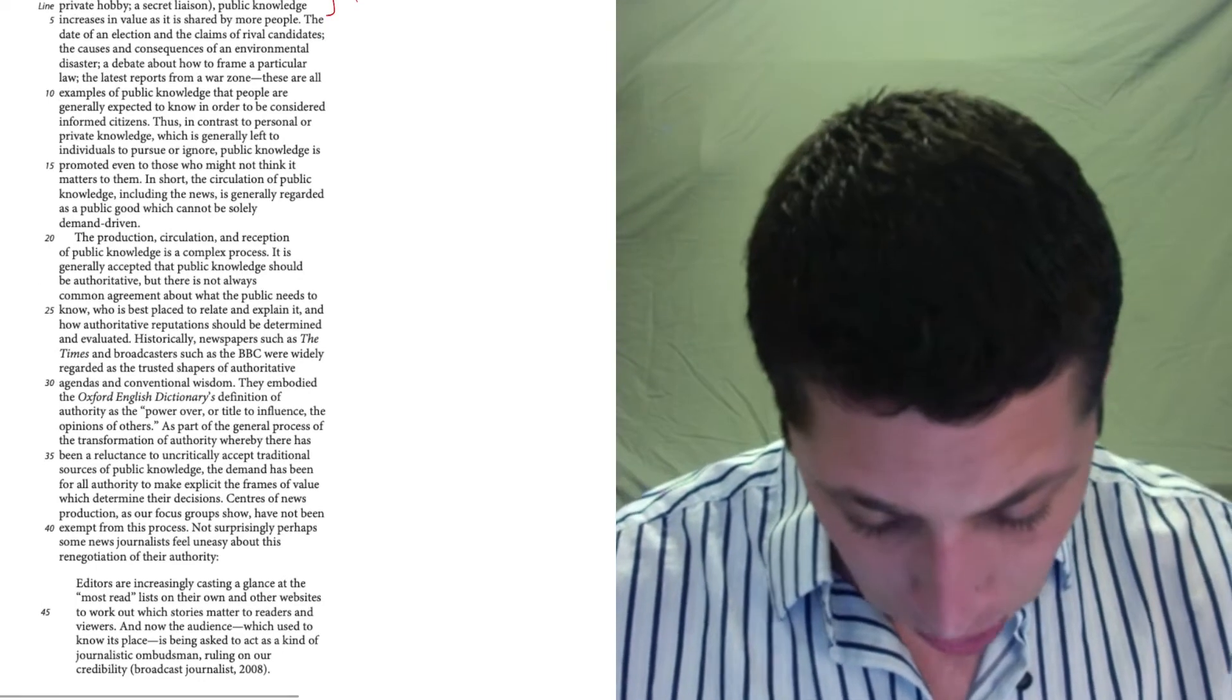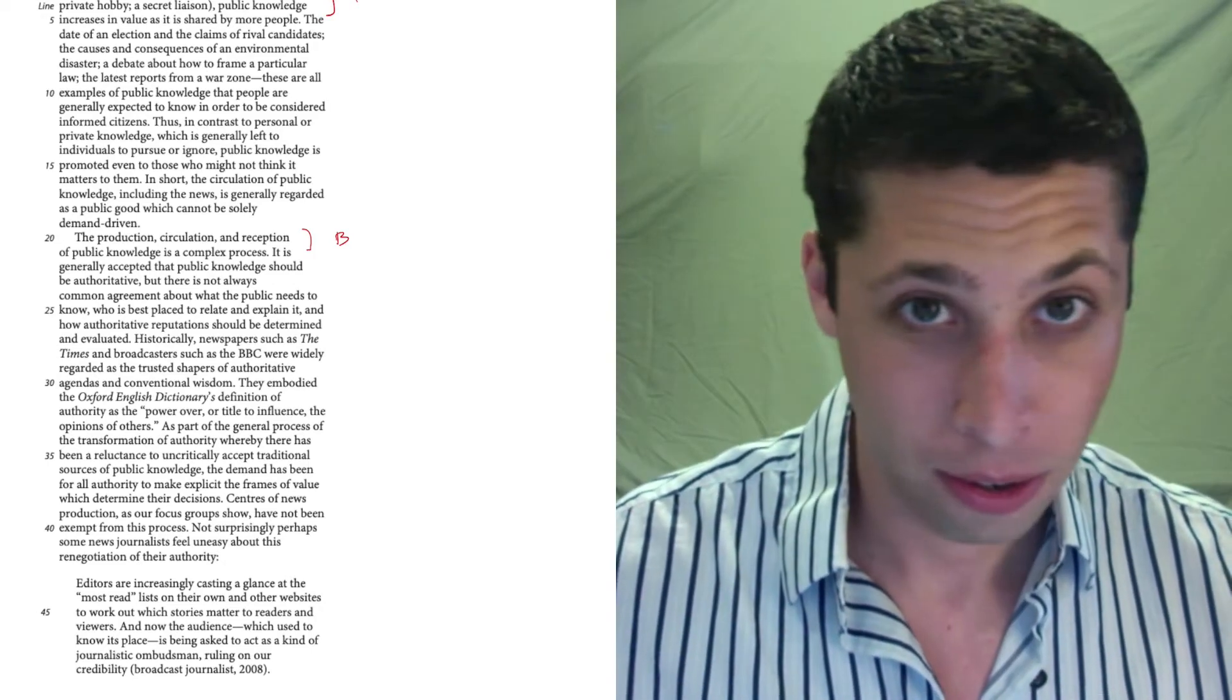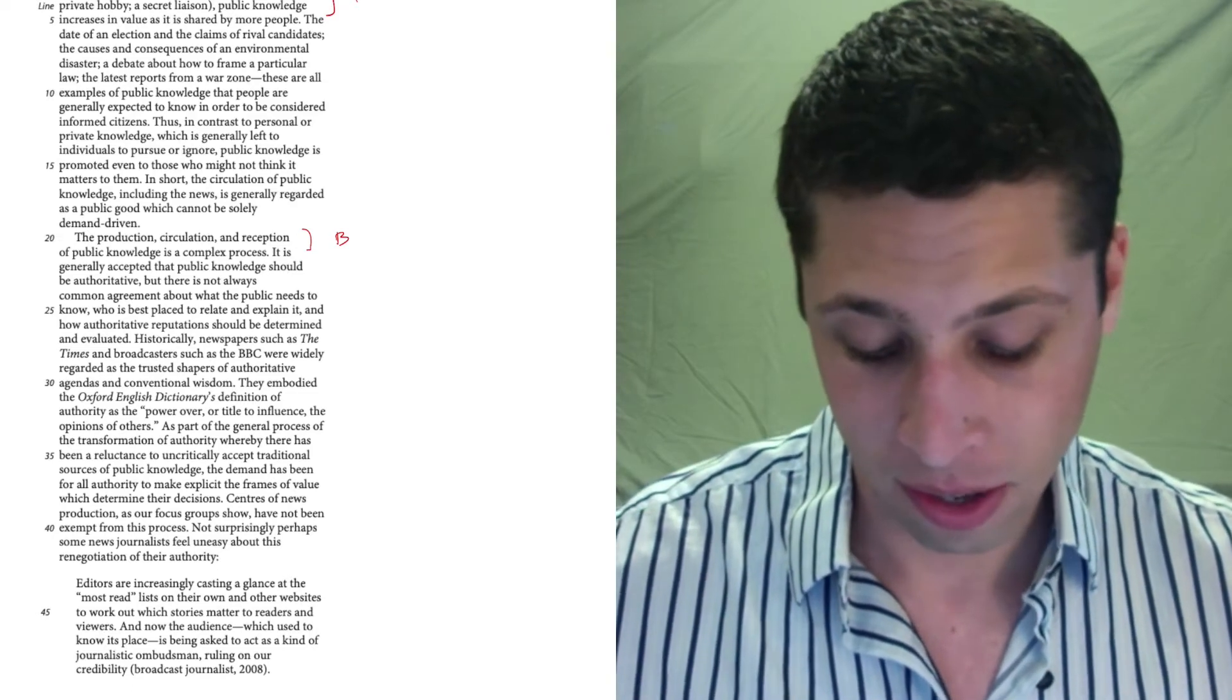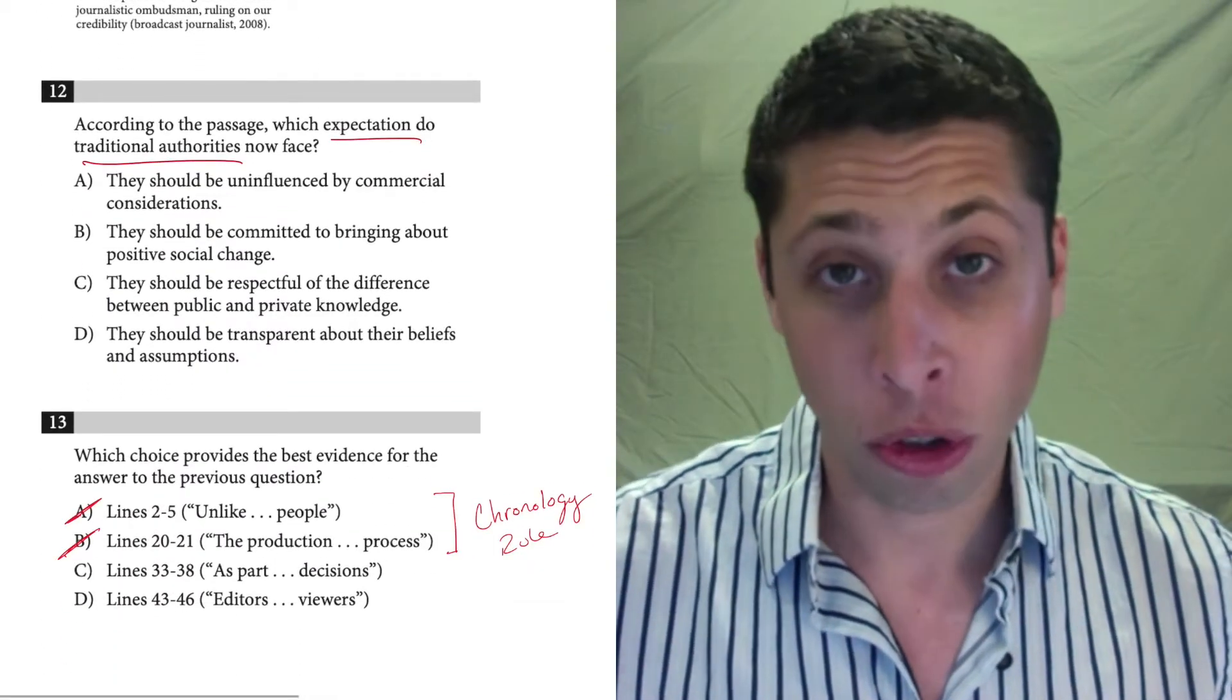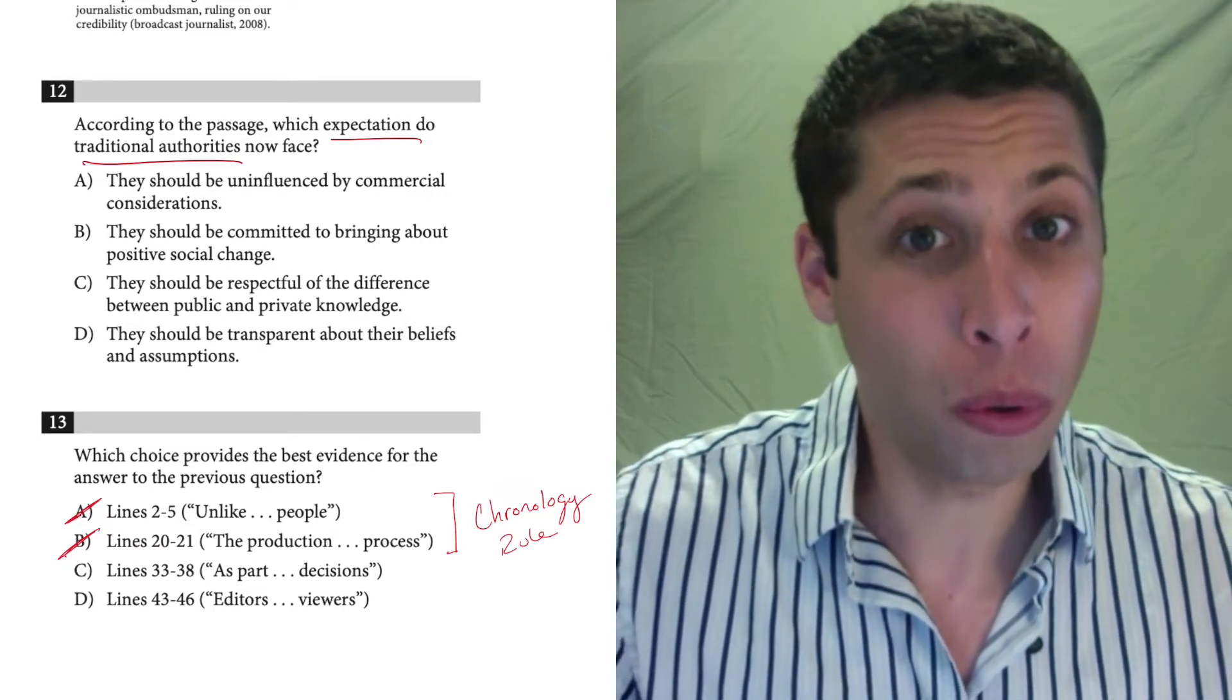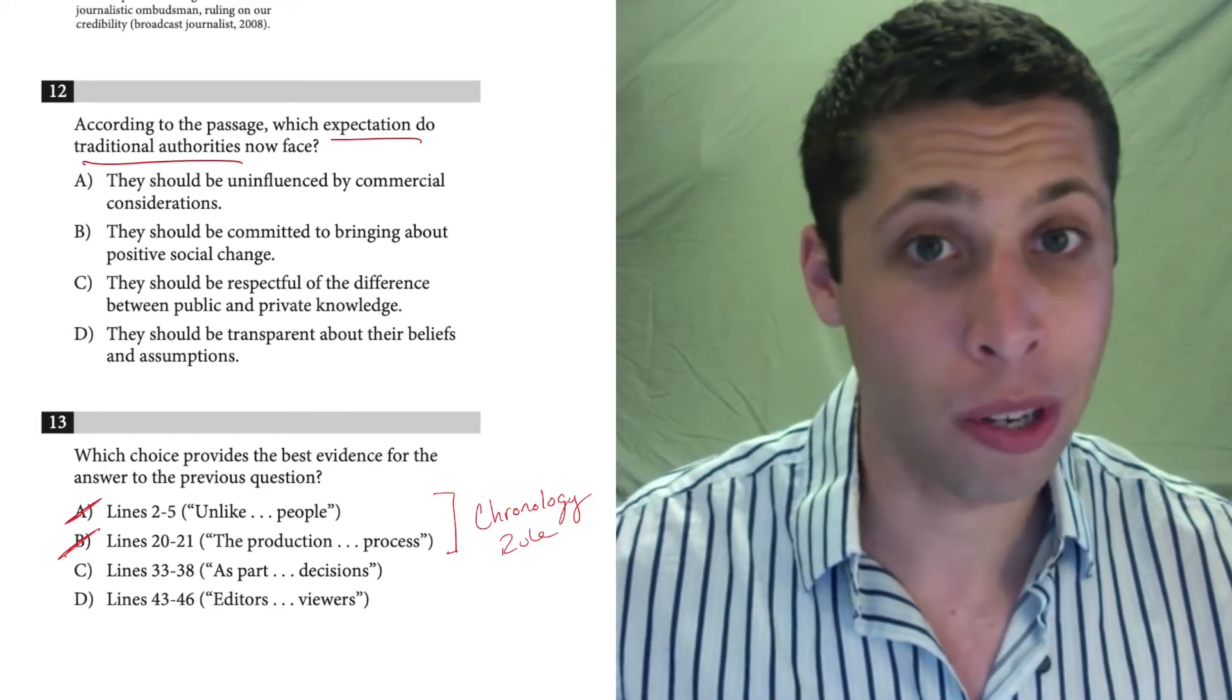Now I go to 20 to 21. That's right here. And line reference B says the production, circulation, and reception of public knowledge is a complex process. Great. Well, that's really bad too. That doesn't say anything about what traditional authorities are or what the expectations they face. This is just like a random statement about public knowledge. So that's not great because I just eliminated the two choices that the chronology rule says should be right. But this is a good example of, it's a chronology suggestion more than a chronology rule. It's really helpful, but occasionally they break it. I'd be pretty confident here that they broke the chronology rule. I did not like either of those two choices.